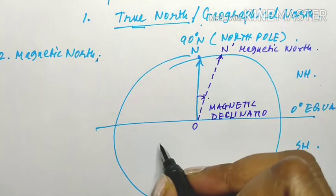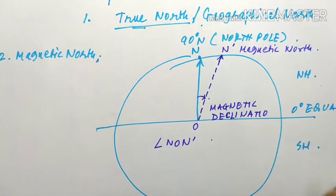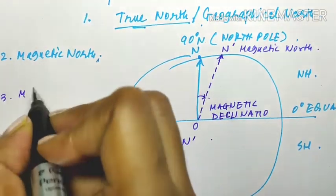This angle, which is angle N-O-N prime, is the third concept: magnetic declination.